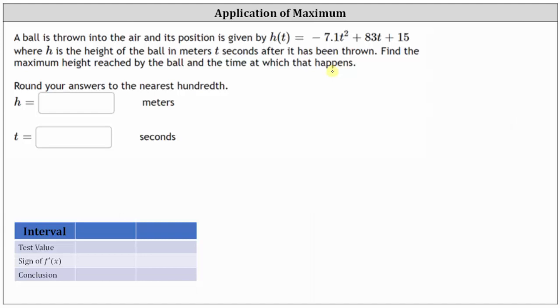However, we'll be determining the vertex using calculus techniques. To determine the relative max or min, we begin by determining the critical numbers, which is where the first derivative is equal to zero or undefined.